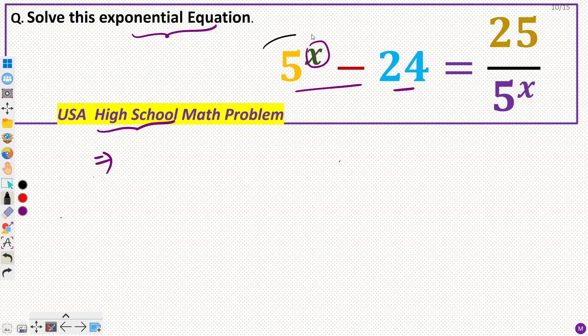If you notice here, this term 5 raised power x is common on both sides. So we can assume this as some other variable. Let's say this is t. So I can rewrite this equation as t minus 24 equals 25 divided by t.